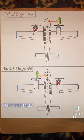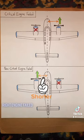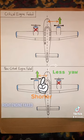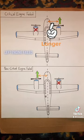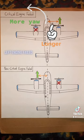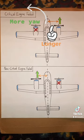If the right engine fails, the relatively shorter distance between the left propeller's thrust and the longitudinal axis means this yawing effect is not as strong. If the left engine fails, however, the longer distance between the right prop's thrust and the longitudinal axis results in a larger yaw — the same way a force applied to a longer wrench would create a stronger turning force to tighten a nut.